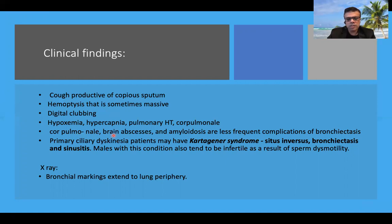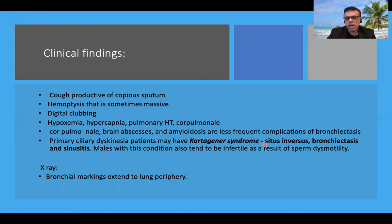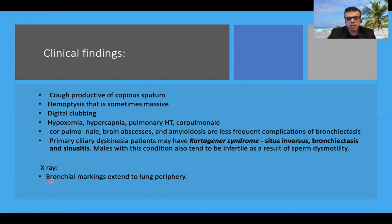Brain abscess and amyloidosis are less frequent complications of bronchiectasis these days, due to aggressive antibiotic therapy. In primary ciliary dyskinesia, many patients have the characteristic triad of Kartagener syndrome: situs inversus — because abnormal ciliary movement leads to abnormal rotation of the viscera — bronchiectasis, and sinusitis. Males with primary ciliary dyskinesia may have sperm dysmotility leading to infertility. X-ray findings show bronchial markings extending to the lung periphery.